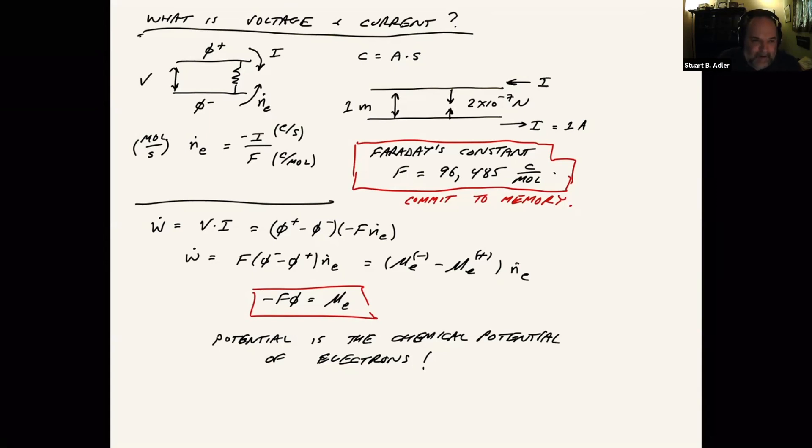Last time we were talking about voltages and currents. And hopefully I convinced you that the potential, when we think of a piece of metal having a certain potential and potential differences between metals, corresponds to a difference in chemical potential of electrons. And so that sort of comes back to the way we traditionally think about things in chemical engineering.